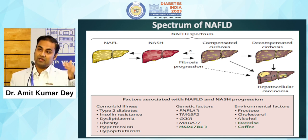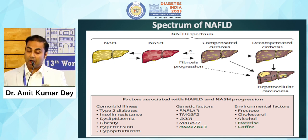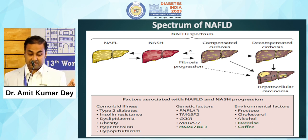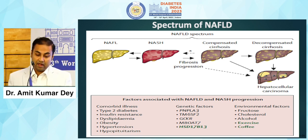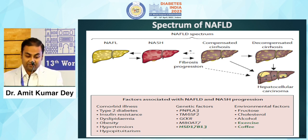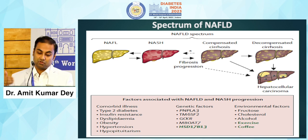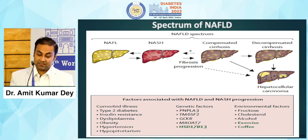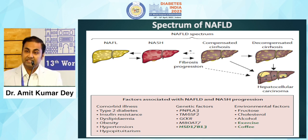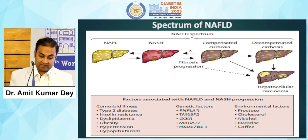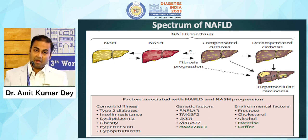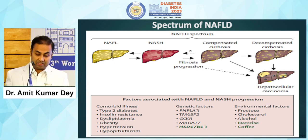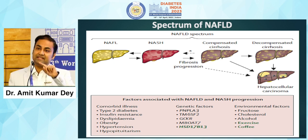This is how the spectrum of NAFLD looks. You have non-alcoholic fatty liver and non-alcoholic steatohepatitis, which progress in a bidirectional way, and that, if it goes into fibrosis, leads to compensated cirrhosis, and when that worsens, leads to decompensated cirrhosis. There are a lot of factors associated with this entire spectrum of NAFLD.